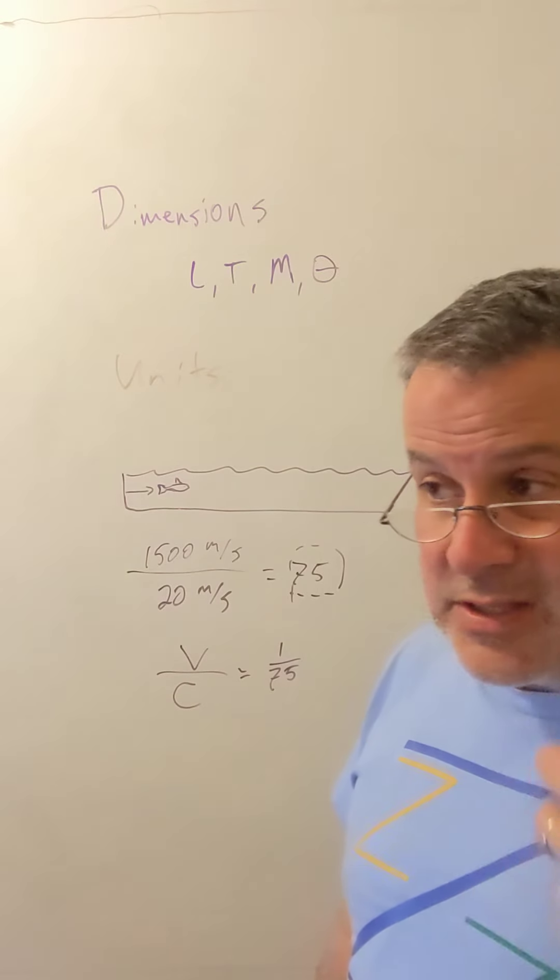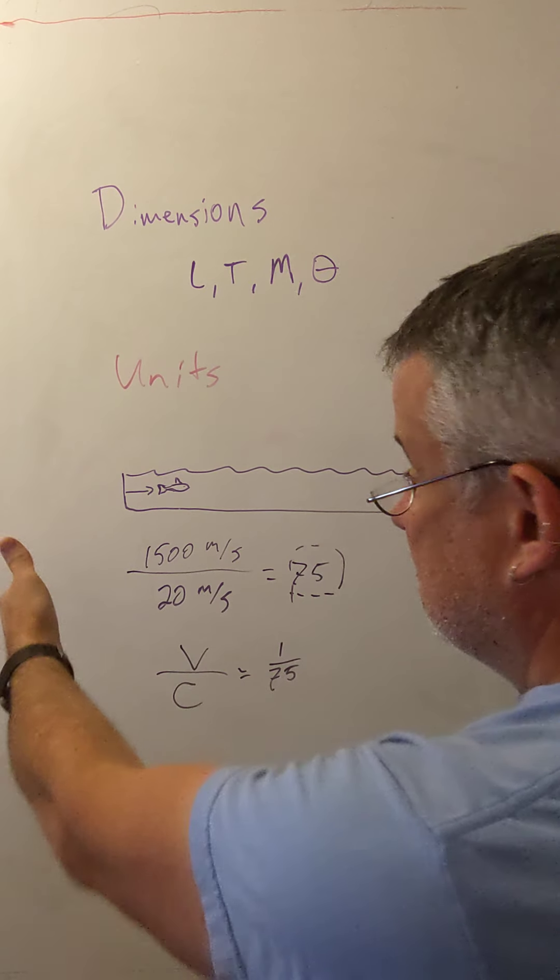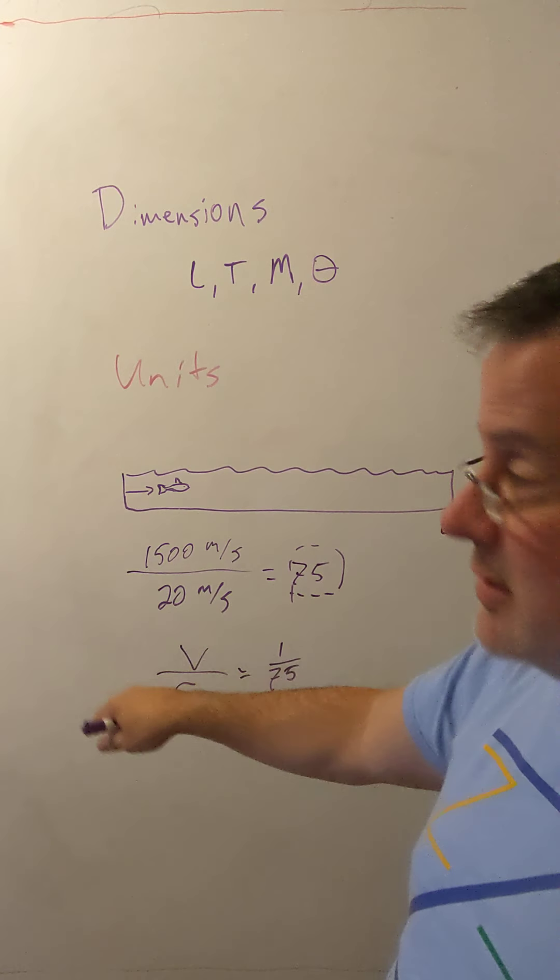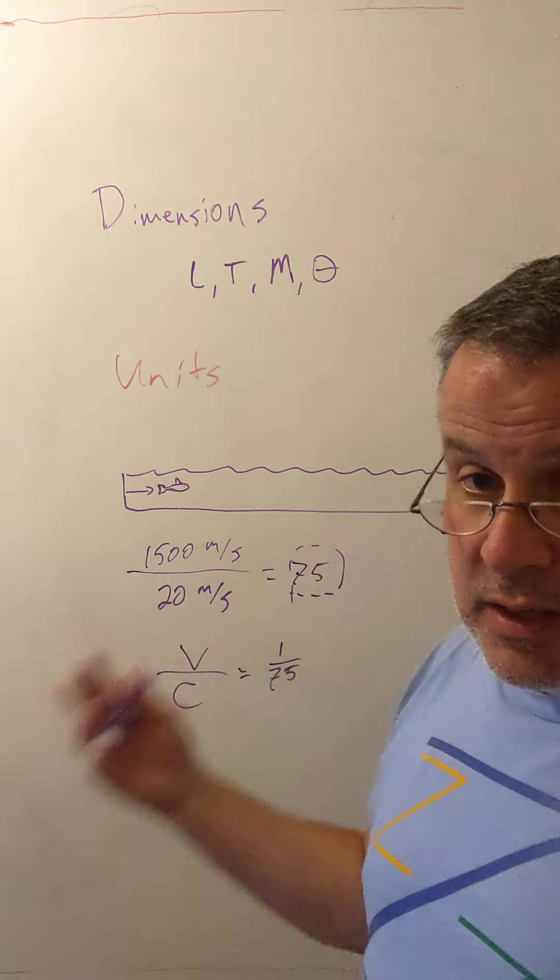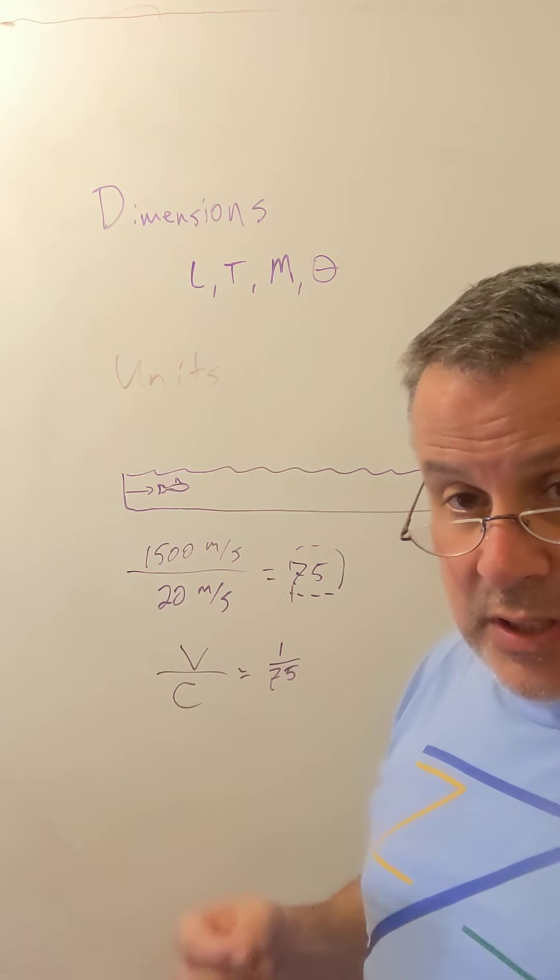So the Mach number is something that stands aside from whether we're using yardsticks as big as the pool, a yardstick that's a yardstick, meters, seconds, years, whatever. That's the idea of a dimensionless number.